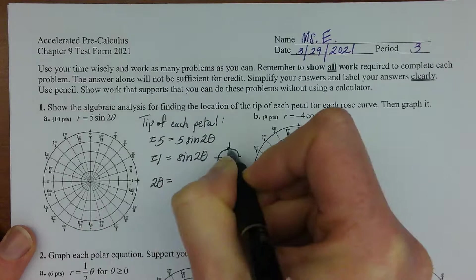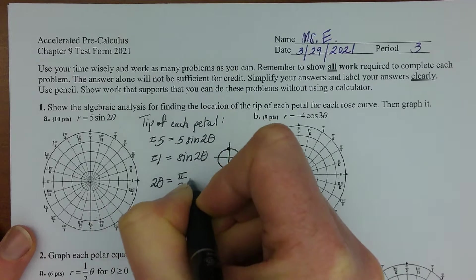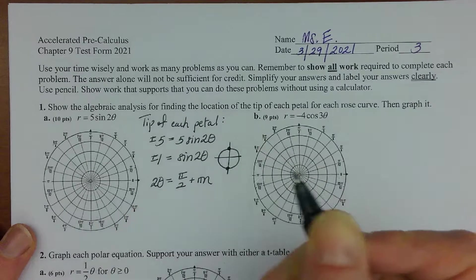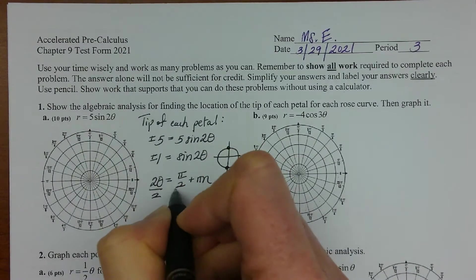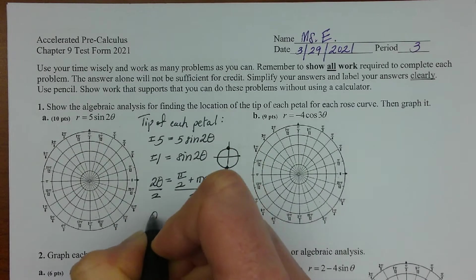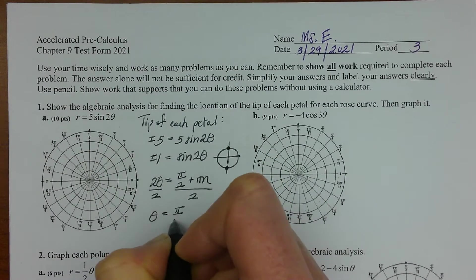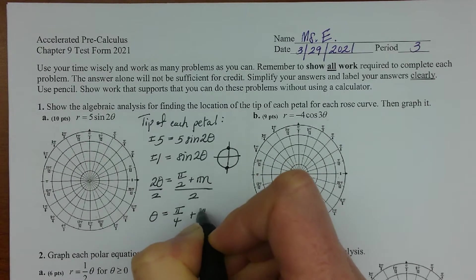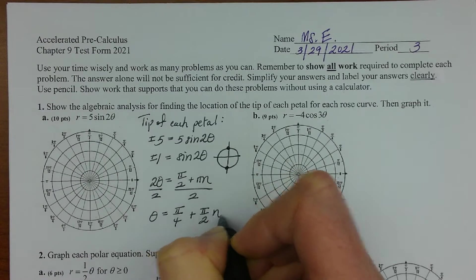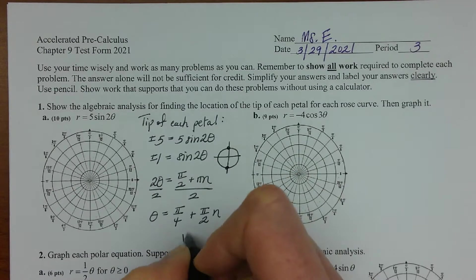And then we're looking for two theta to basically equal pi over two plus pi n. To solve for theta we're going to divide both sides by two.